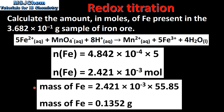In the next step we will convert from amount in moles to mass in grams. To do this we multiply the amount in moles of iron by the molar mass of iron, which gives us a mass of iron of 0.1352 grams.